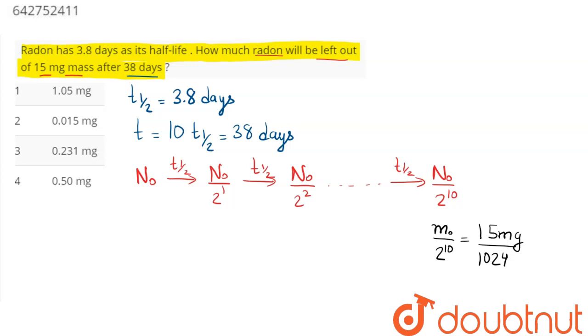This much mass will remain active. Hence, we can say this is approximately 15 divided by 1000, which comes to 0.015 milligrams. So 0.015 milligrams means option number 2 is the correct answer.